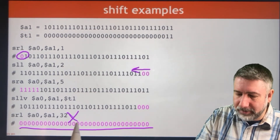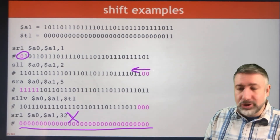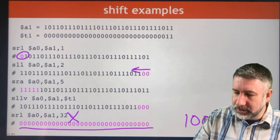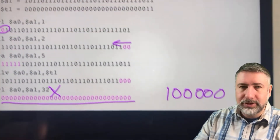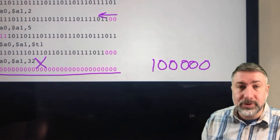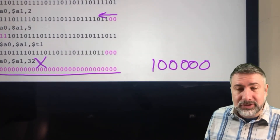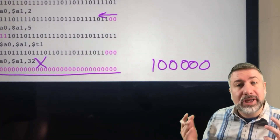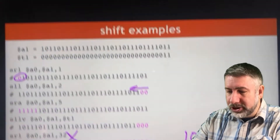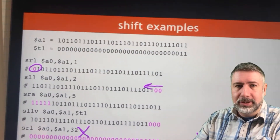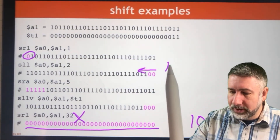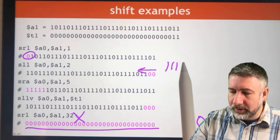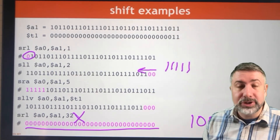Shifting by 32 bits is not permitted because 32 in binary is 1 0 0 0 0 0, which requires six bits. We only have five bits for our shift amount. So the most we can shift is 1 1 1 1 1, which is 31.